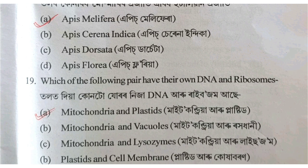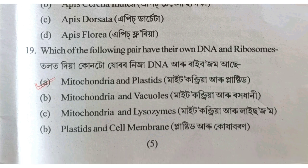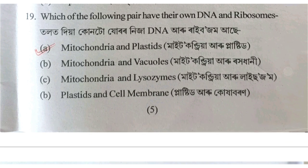Which of the following pairs have their own DNA and ribosomes? Both mitochondria and chloroplasts have their own DNA and ribosomes — they are lasting organelles that carry out their own digestion processes.